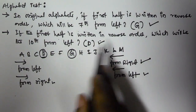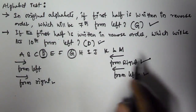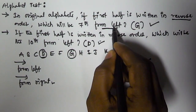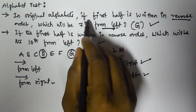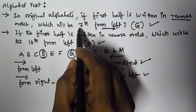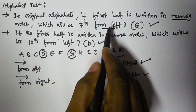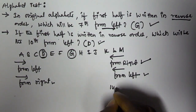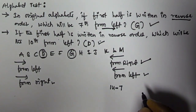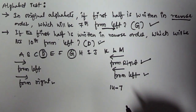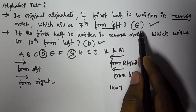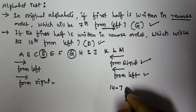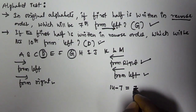Let's solve this smartly. If the first half is written in reverse order and we need to find the seventh from the left — whenever you see 'reverse,' from left becomes from right. So we need to find the 7th from the right. The first half contains 13 letters, but to find from the right we subtract from 14. So 14 minus 7 equals 7.